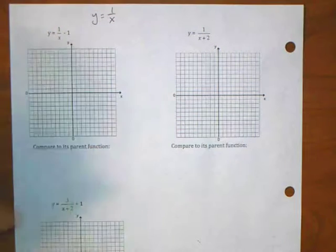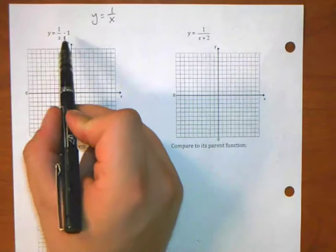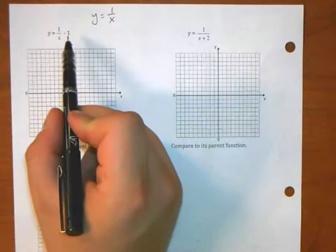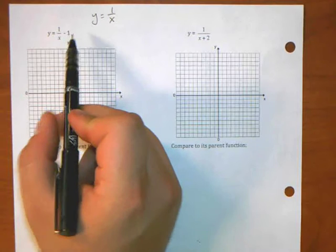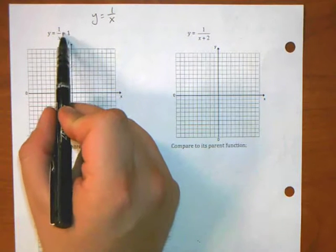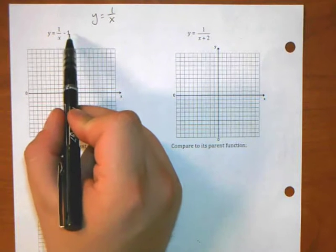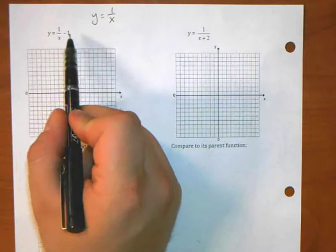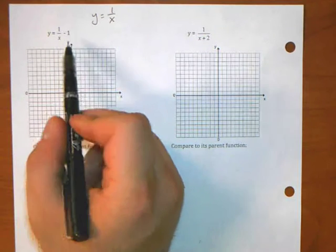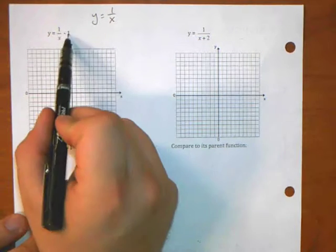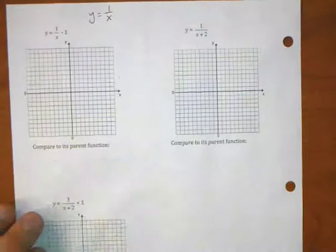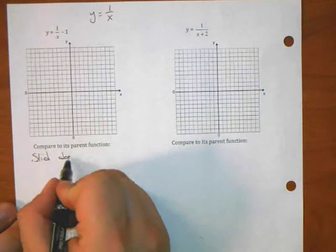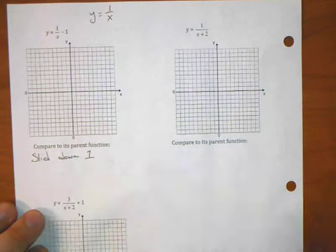Okay. We said this is a k value. This is, folks, this value is added or subtracted, not underneath of the fraction bar. It's outside the fraction bar. Outside the fraction bar is up and down. Specifically, it's moved down 1. So it's slid down 1.